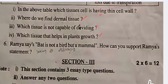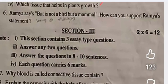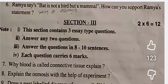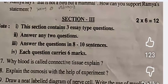The next question: Ramya says bat is not a bird but a mammal — how can you support Ramya's statement? Section 3 contains three essay type questions; answer any two — you can leave one question by choice.